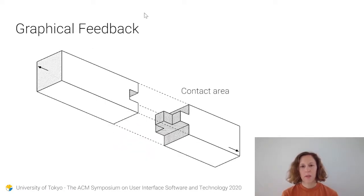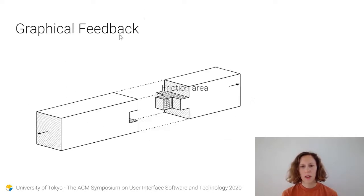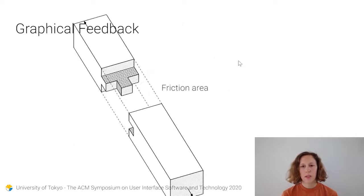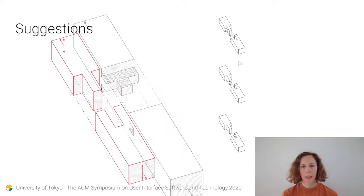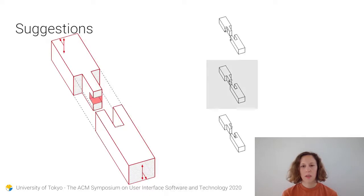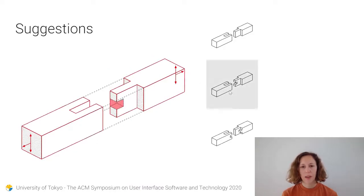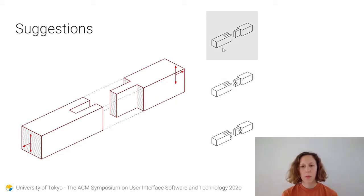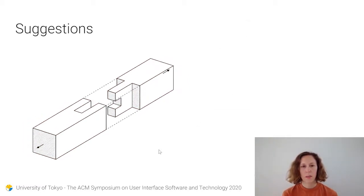Localizing such parts is a simple but effective metric for joint durability. Contact area is relevant for joints intended to be glued, and friction area for joints intended to be held together by friction only. When a joint is invalid — that is to say it fails to meet the binary evaluation criteria — suggestions are shown on the right side. These consist of up to four valid joints within one edit distance from the current design.